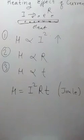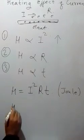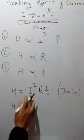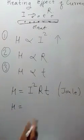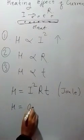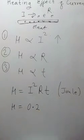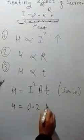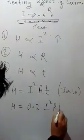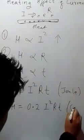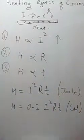Now there is another unit called calorie. When you convert joules into calories, you will get 0.2. So this heat will be 0.2 I²RT in calories.